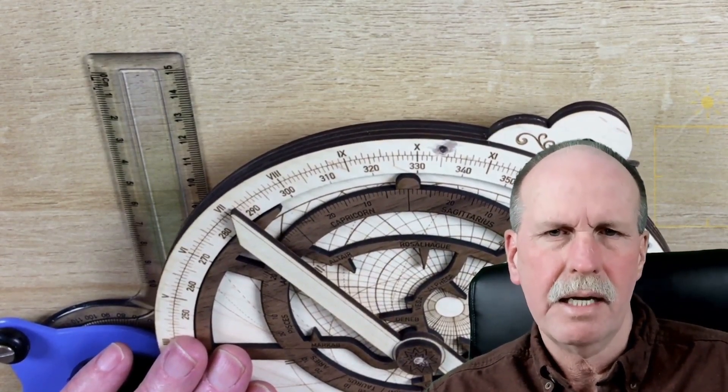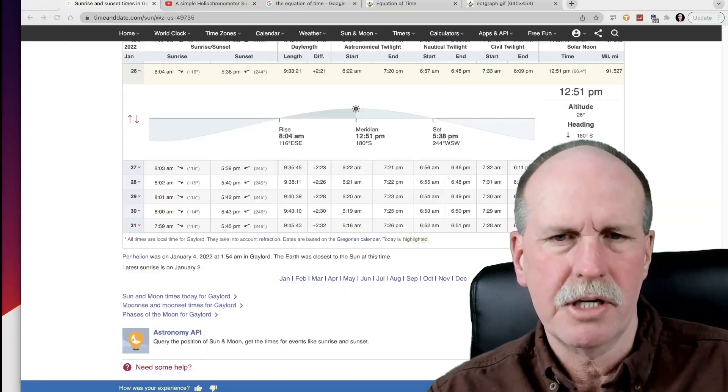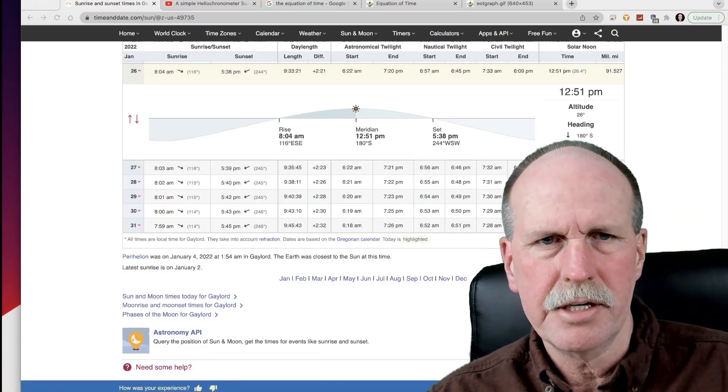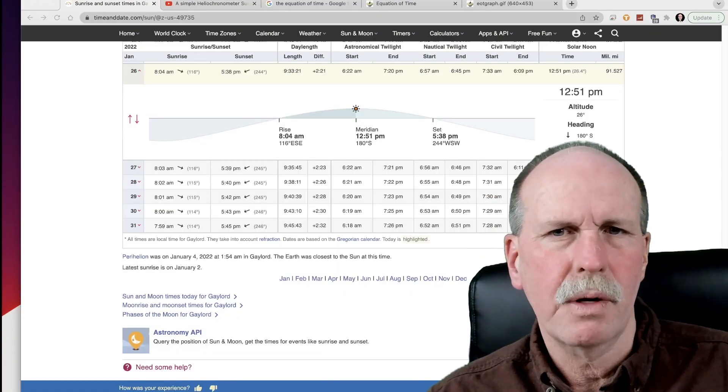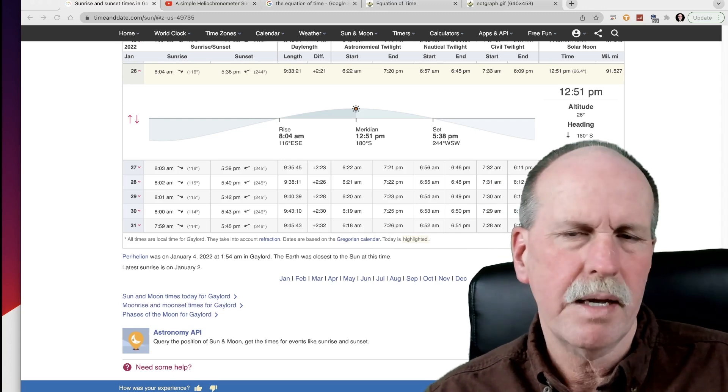Now we add the 51 minute correction to that, and that comes up to 8:01. Let's see what time dawn is in Gaylord, Michigan. It's 8:04. We're three minutes off. That may have been a reading error.